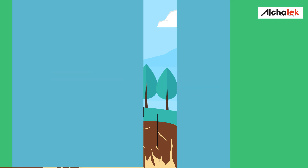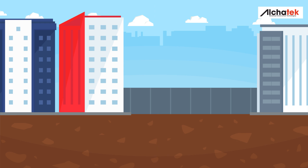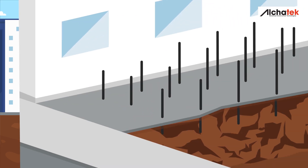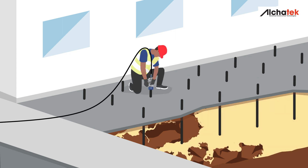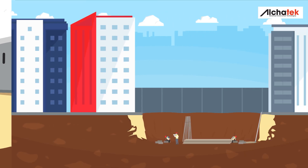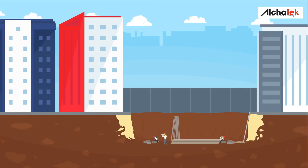Alcatec soil stabilization resins reinforce excavation areas next to existing buildings. Prior to excavation, the contractor drives pipes into a grid pattern and injects soil stabilization resins to protect the existing structures on each side.